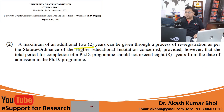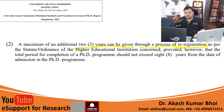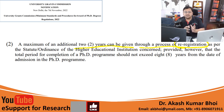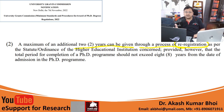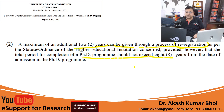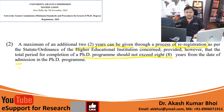In few cases, a candidate may need extra time. An additional two years can be given through a process of re-registration, with approval from the HEI and the relevant committee, provided there is a justified reason. However, the total PhD program duration in this case should not exceed eight years from the date of admission.